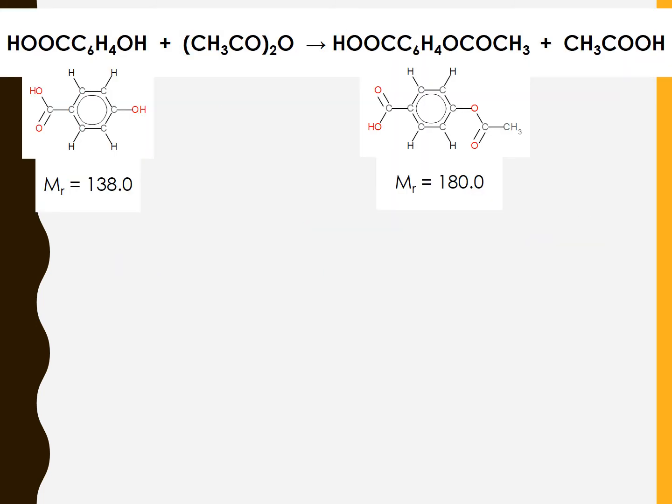The percent atom economy is given as follows: take the MR of the desired product, in this case the aspirin, divide that by the total of the MRs of all of the reactants and multiply by 100. To calculate the atom economy for this particular reaction, we already had the MRs for the salicylic acid and the aspirin earlier on. The MR for the ethanoic anhydride is 102.0.